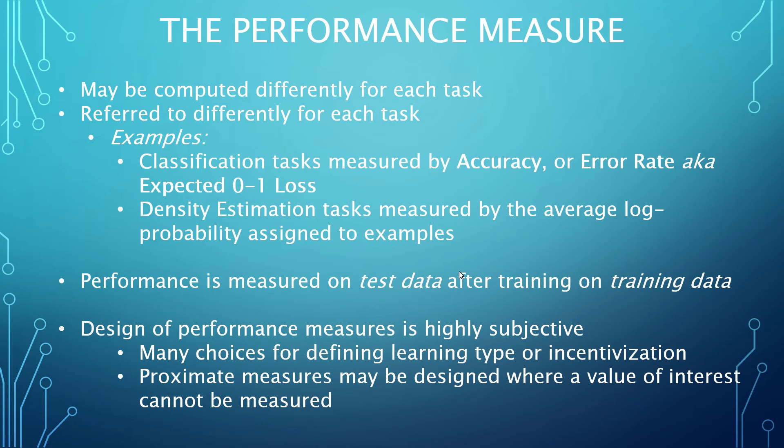For density estimation, for example, the most common approach is to report the average log probability that the model assigns to some examples. Taking the logarithm of the probability creates a scenario where minimization is the goal, since for values between 0 and 1, the larger the value, the smaller the result of the logarithm will be. And so minimization is desired as a means to bring the performance measure near to 1. It also amplifies the difference between values. Depending on the task, a different target value might then be desired. For example, if the true probability distribution is known, the performance measure might be the minimization of the delta between the computed distribution and the true distribution.